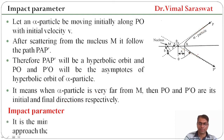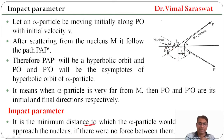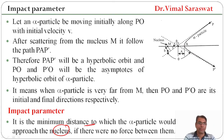Impact parameter is the minimum distance to which the alpha particle would approach the nucleus if there were no force between them. When there is no mutual reaction, the alpha particle follows a straight path, and the minimum distance in this case is represented by B, which is our impact parameter.